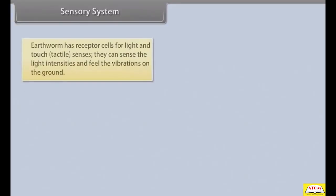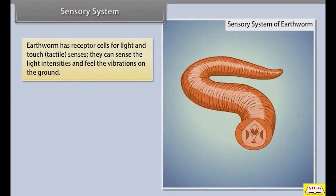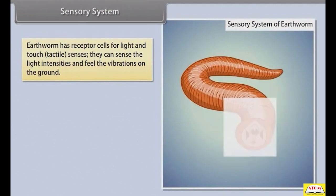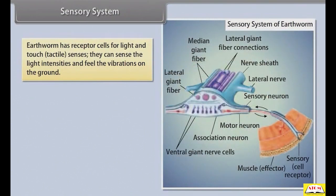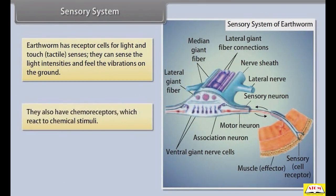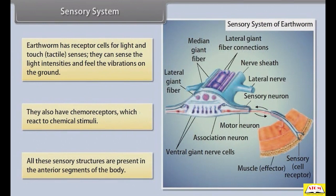The earthworm has receptor cells for light and touch — that is, tactile senses. They can sense light intensities and feel vibrations on the ground. They also have chemoreceptors which react to chemical stimuli. All these sensory structures are present in the anterior segments of the body.